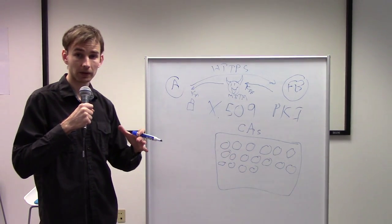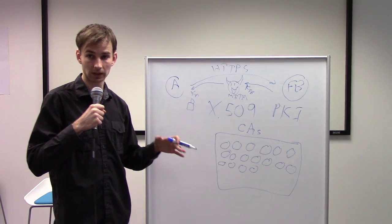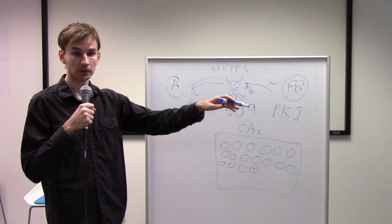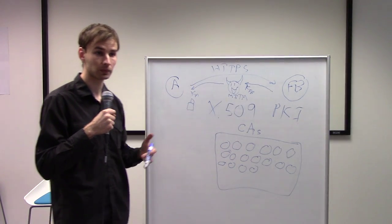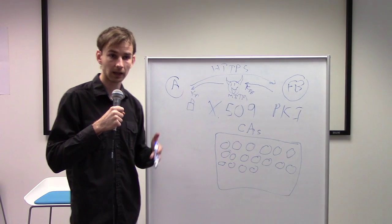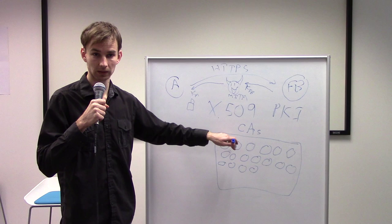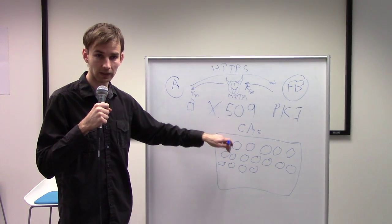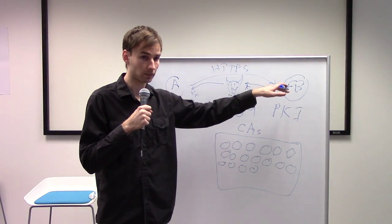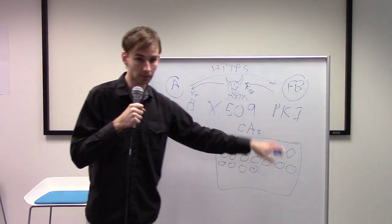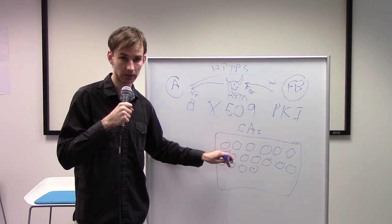These things come shipped when you get an operating system or a web browser. They come shipped with a list of public keys that belong to these certificate authorities. When you aggregate all those together, I think they came up with a number that was over a thousand certificate authorities. On any one computer there might be a few hundred. But in aggregate the world collectively trusts the least trustworthy. This is a very important point. There's over a thousand of these certificate authorities and when you connect to Facebook.com, you are not trusting the group. You're trusting the bad apple in the group. That's who you're trusting.